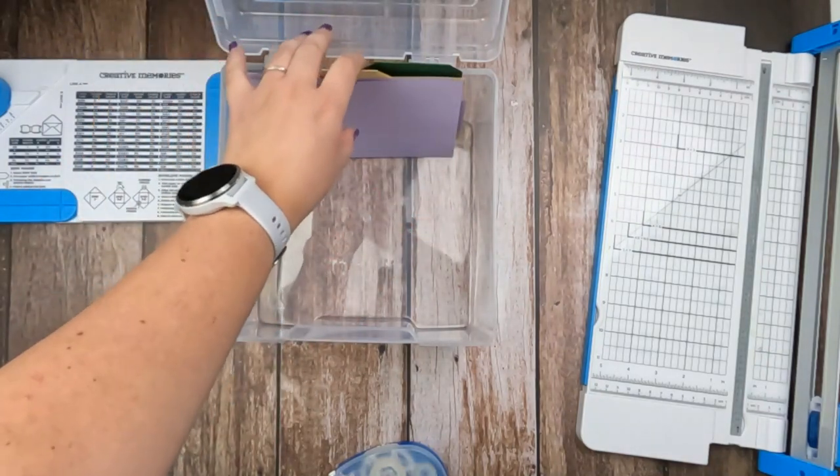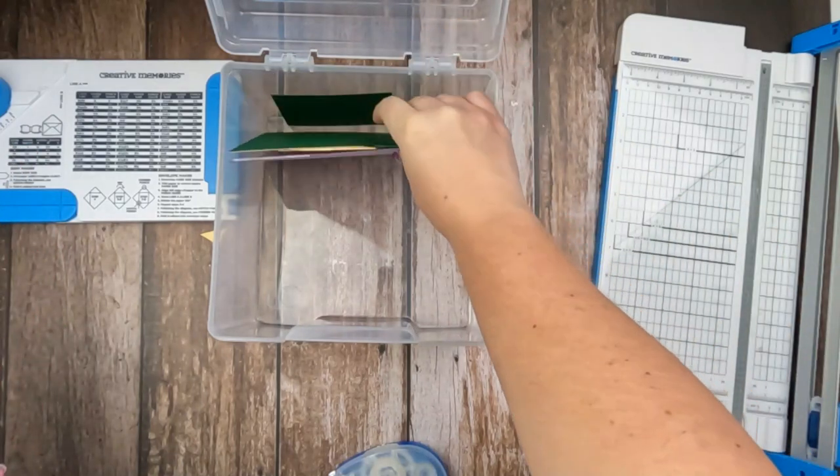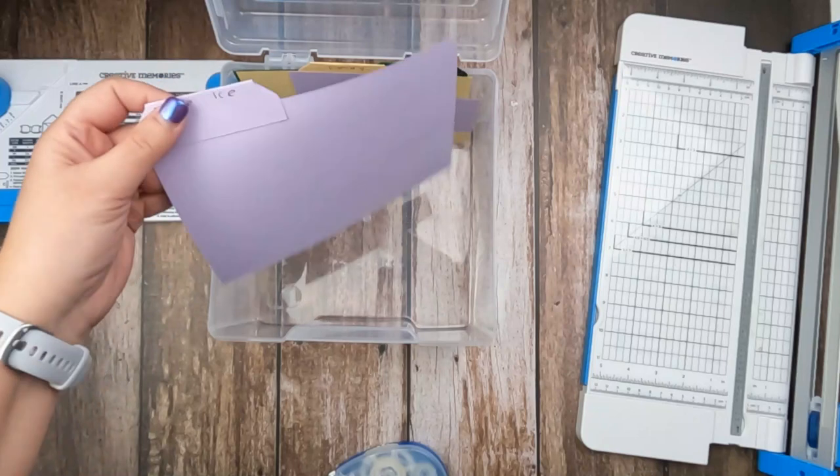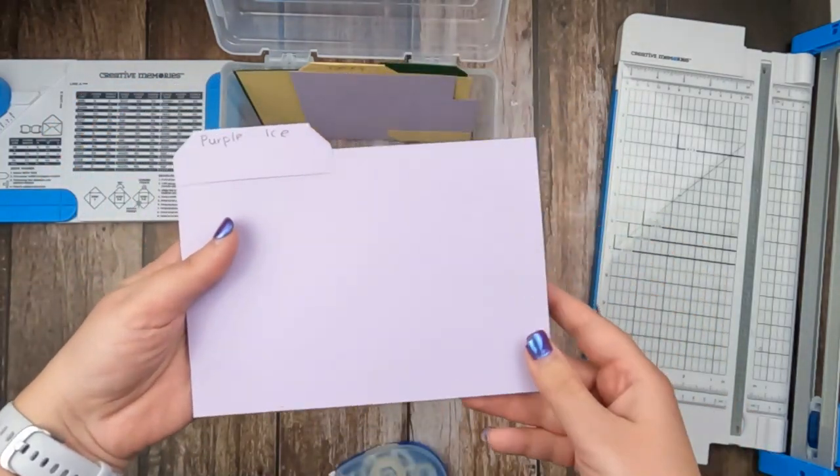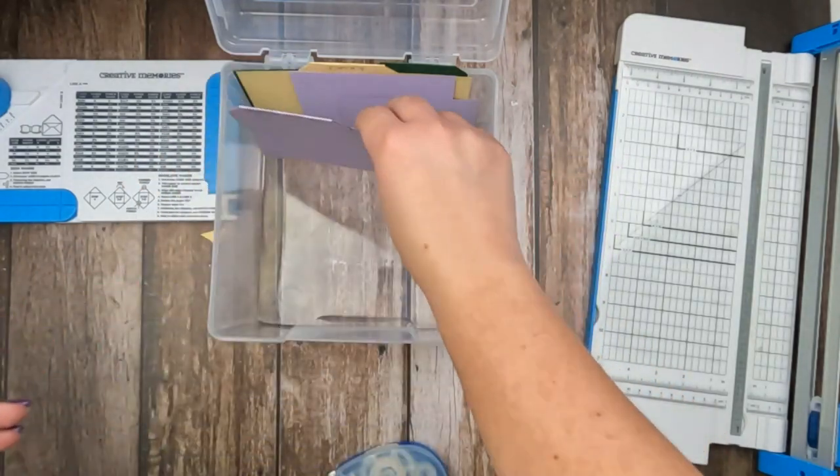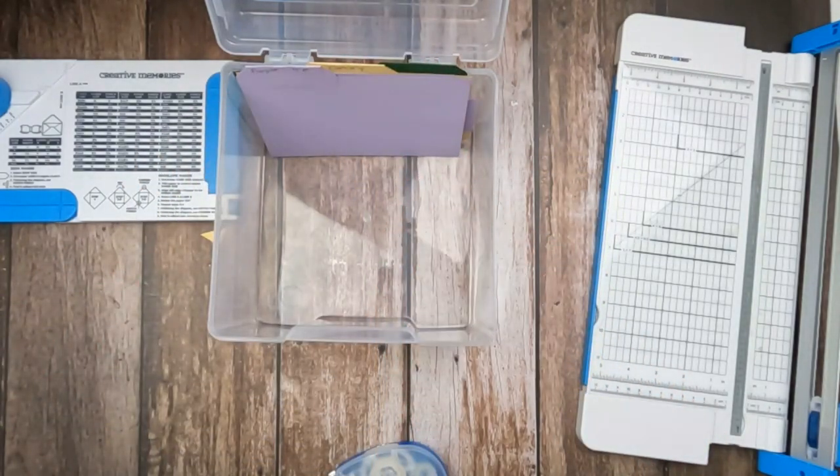Now when there's just a few things in this box, they don't hold up very well. But once I start filling it up, these dividers are going to be perfect. So this is a five by seven card that I cut out and then added the tab to. But you don't have to use the tabs just for organizing. They can play a really fun role in your scrapbooks as well.